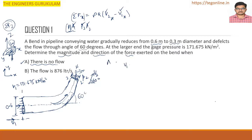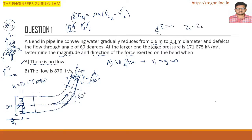In Case 1 (no flow): V1 = 0, V2 = 0. The pipe bend is assumed to be in a horizontal plane, so Z1 = Z2, meaning the elevation difference is zero (ΔZ = 0).